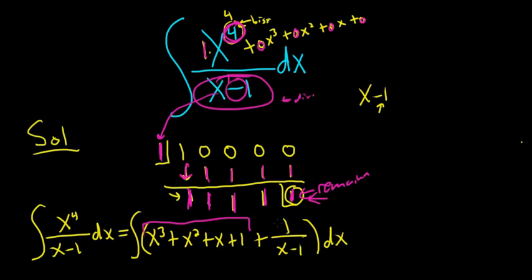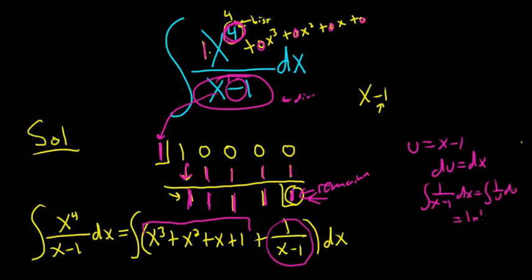All right. Let's finish this. This is a really easy u substitution. If you make a u sub here, du is dx. Let me just show you. And so the integral of 1 over x minus 1 dx becomes 1 over u du. And that gives you ln absolute value of u, which is simply x minus 1. So plus c. I wanted to skip the work for that.